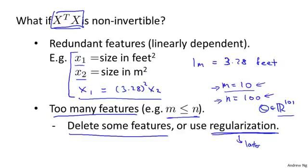And if you do have redundant features, if you just delete one of these features, you really don't need both of these features. That would solve your non-invertibility problem.